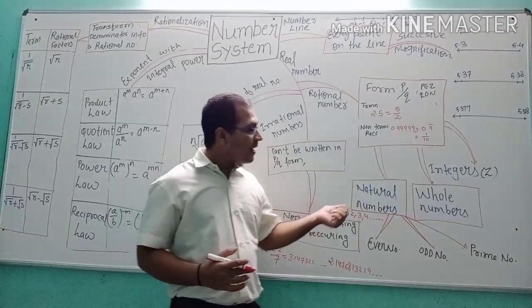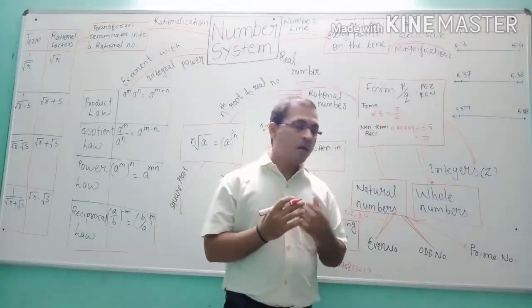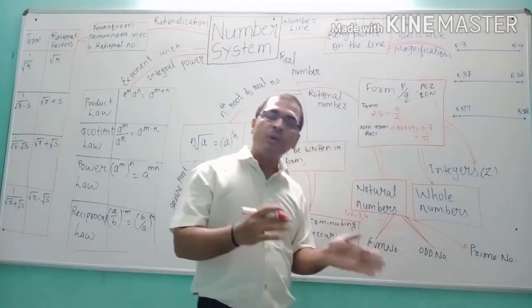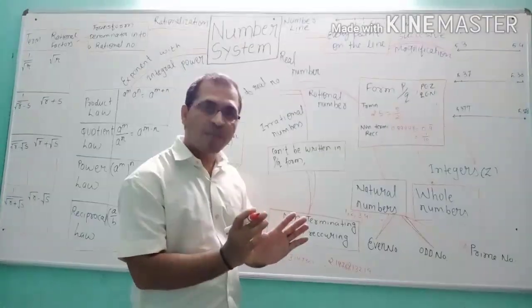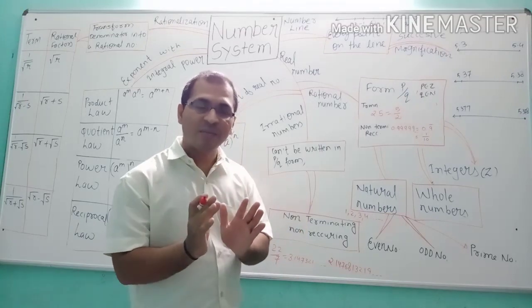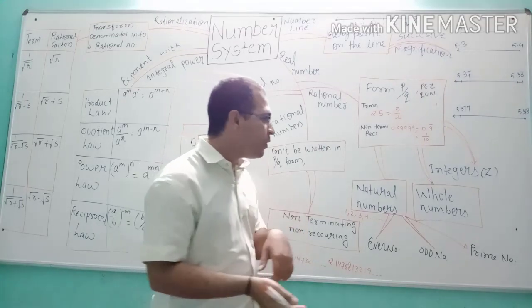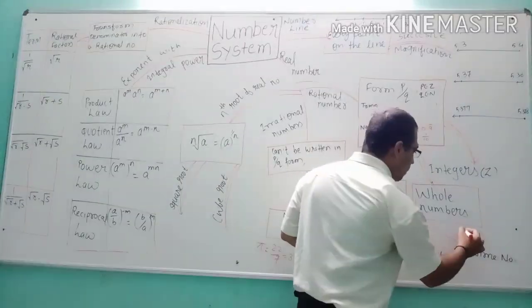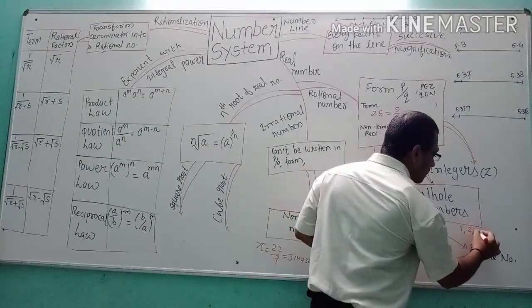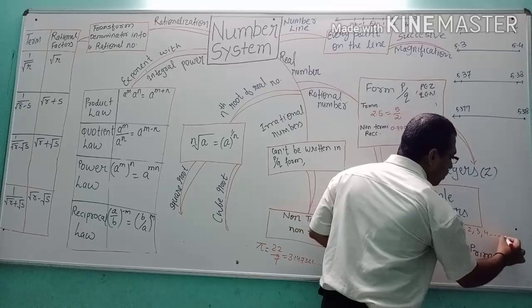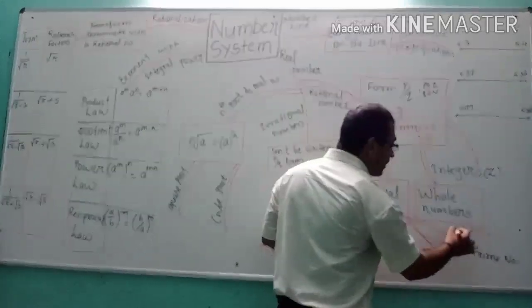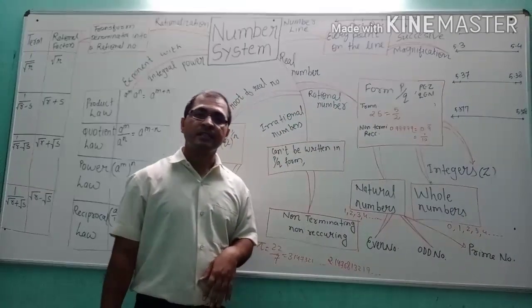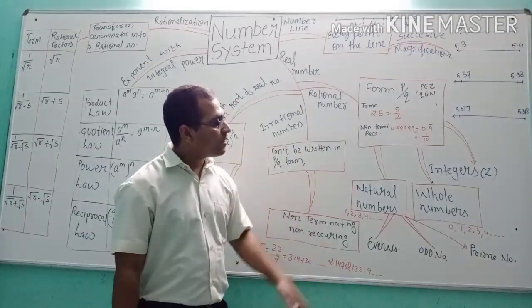Whole numbers are basically natural numbers including zero. That means all the natural numbers 1, 2, 3, 4, and so on, including zero, are known as whole numbers.